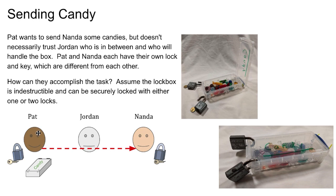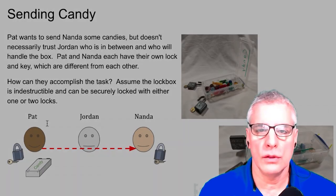So, let's say that Pat and Jordan and Nanda are together in the same place. But Pat wants to send a box of candy to Nanda, but has to pass it through Jordan. So, the problem is, if Pat just passes the box of candy, then Jordan's going to get it and open it up and eat some of that candy. And it's not going to get to Nanda. So, how are we going to do this?